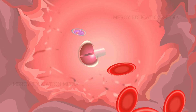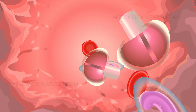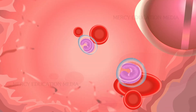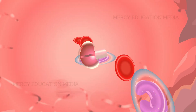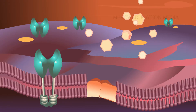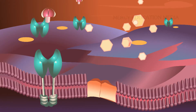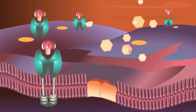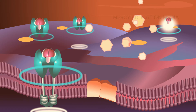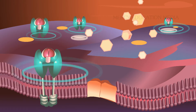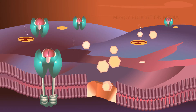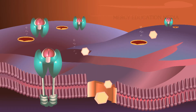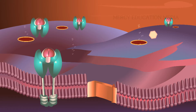Insulin is responsible for the absorption of glucose into the cells for their energy needs, and into the liver and fat cells for storage as glycogen reserve.